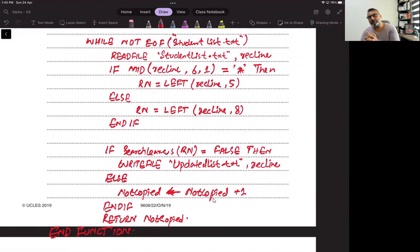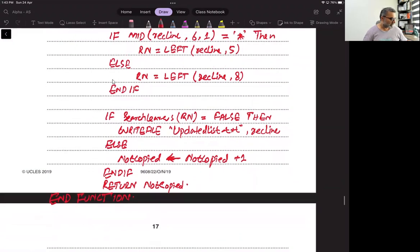How many times the lines, those we have extracted from the student list were found, the reference numbers were found in the array. If they were found, then we just count. And then once the loop ends, we write end while.